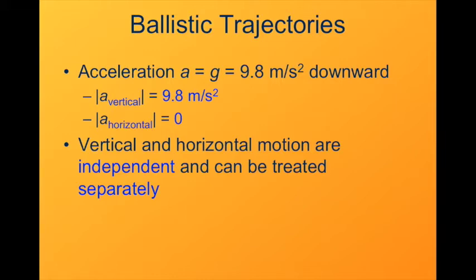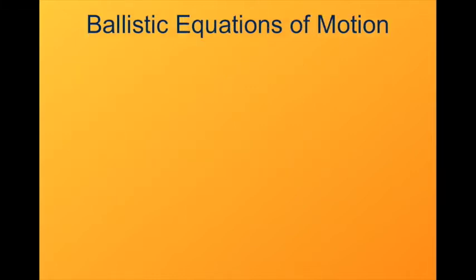Now they're related. They're linked through the time. We can find where it is vertically in time, where it is horizontally in time, and relate those to each other. But one doesn't directly affect the other. Given what we know, that the acceleration is zero in the horizontal direction, down in vertical direction with a constant value of g, then we can construct equations of motion for the x and y directions. And that's what this slide will do. It's going to look kind of busy, but it's nothing that we haven't seen already.